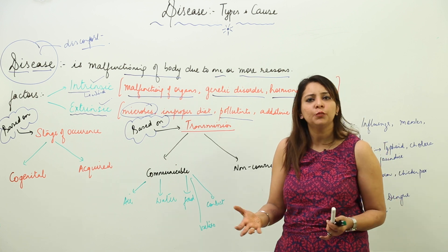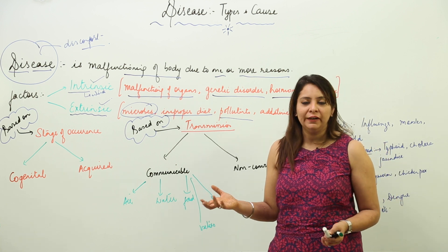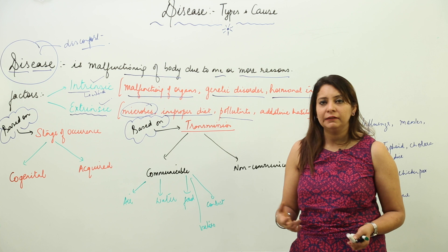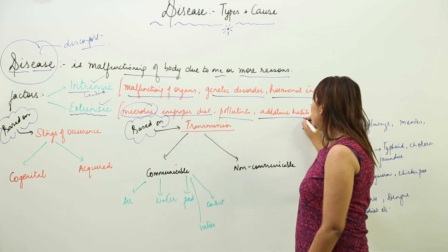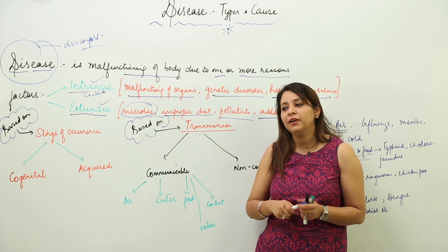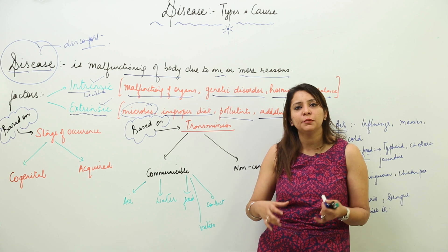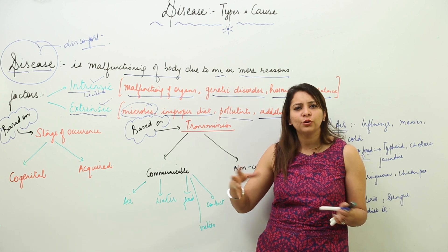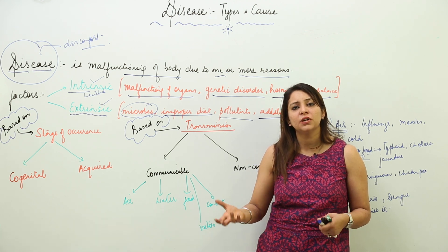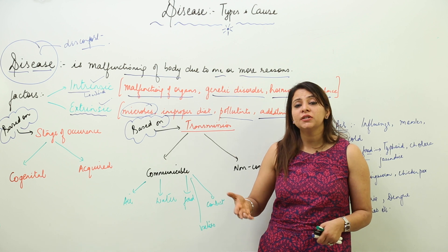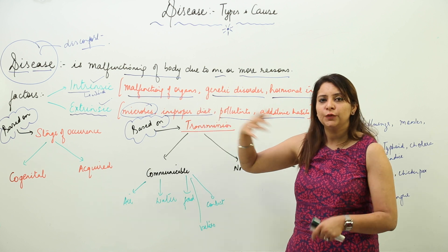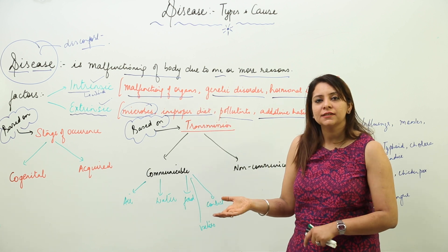Pollutants are also an extrinsic factor. With modernization, air, water, and land pollution is increasing, and one can be sensitive to those pollutants. Additionally, addictive habits — such as tobacco, drugs, heroin, or cocaine — affect the body and can lead to fatal diseases. So factors are classified as either intrinsic, lying within the body, or extrinsic, lying outside.